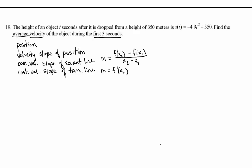Hi, I'm Ms. Hearn. Let's get started. The height of an object t seconds after it's dropped from a height of 350 meters is s(t) = -4.9t² + 350. Find the average velocity of the object during the first three seconds.